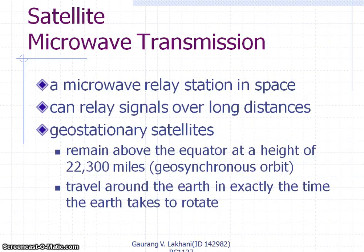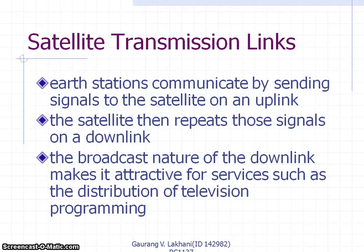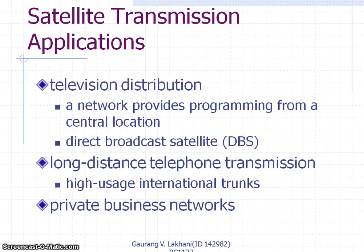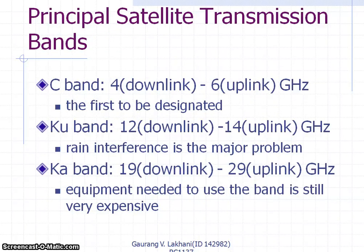Satellite microwave transmission requires microwave relay stations in space, and geostationary satellites are needed to handle these activities. Each station communicates by sending signals to the satellite on an uplink. The broadcast nature of the downlink makes it effective for services such as television programming distribution. Uplinks upload data to the satellite transponder, which then sends the data to the receiver at the downlink station. Satellite transmission applications include television distribution, private business networks, and long-distance telephone transmission.